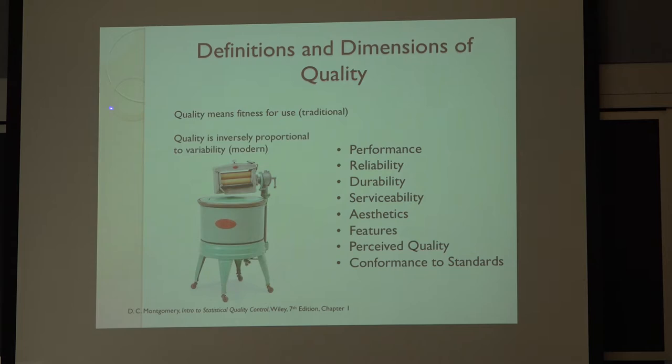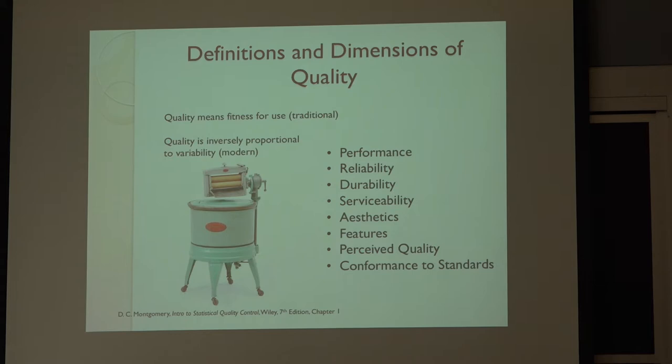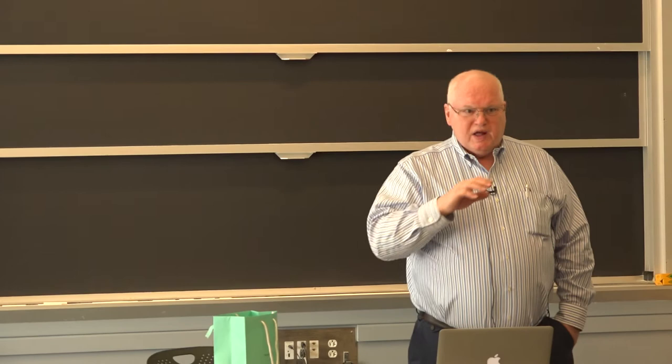He talks about some of the metrics: performance, reliability, durability, serviceability. Aesthetics, features, perceived quality, conformance to standards. Conformance to standards was one of the old metrics. As long as you met General Motors standards, they would have no problem with what you're supplying. If you didn't, they would threaten to sue you.